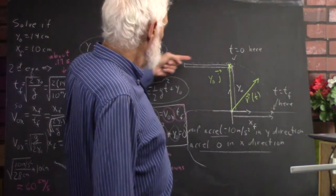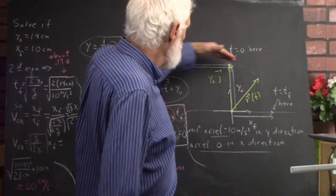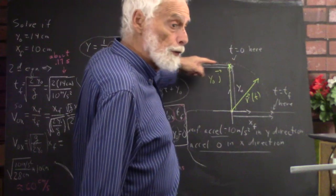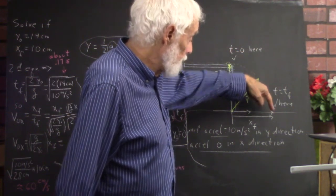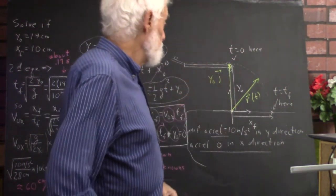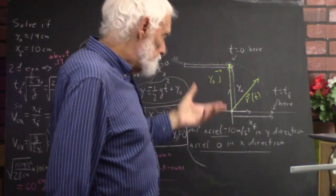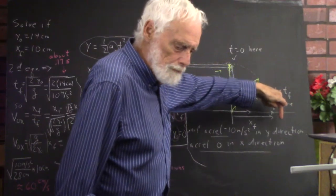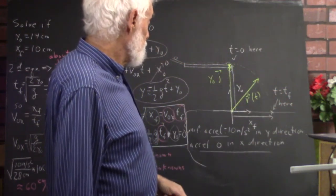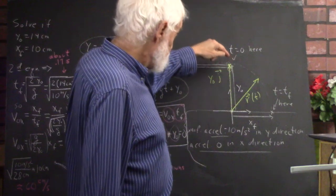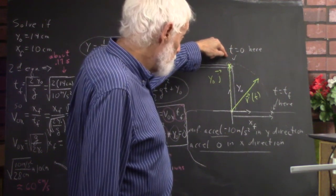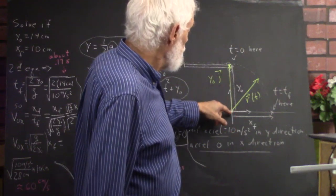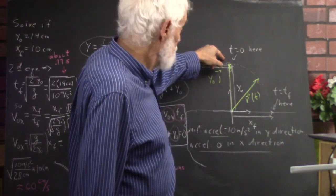Looking at the problem of a projectile rolling off the edge of a tabletop, rolling off a horizontal surface and then falling to the floor, we want to analyze the projectile motion. This is an experiment we're actually going to do to determine the velocity of the ball from how far it goes along the floor and how high it is when it comes off the ramp.